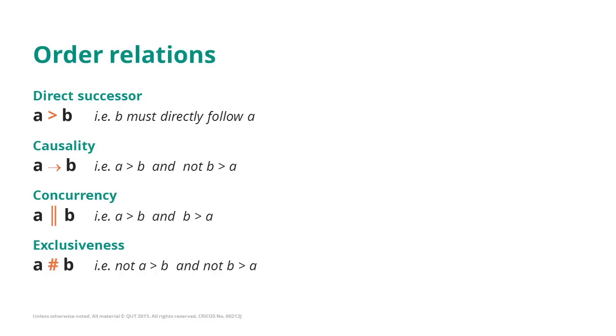Causality essentially means that when A causally leads to B, we have found at least one instance that A is in a direct successor relationship with B, and that we have never seen any instance where B is being followed by A.